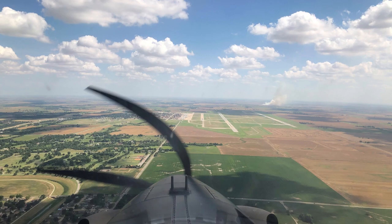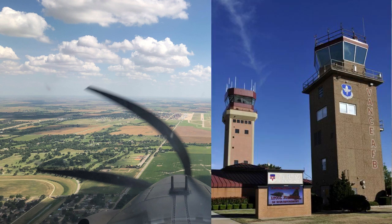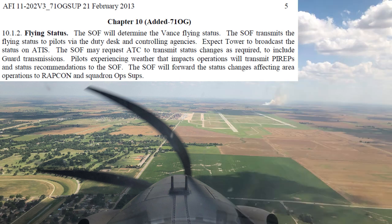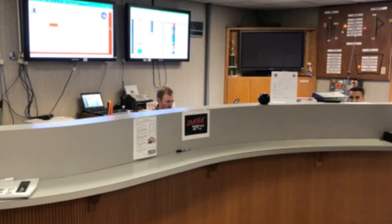The supervisor of flying, which is a T-6, T-1, or T-38 instructor pilot that sits in the air traffic control tower, sets the status based on current and forecasted weather as well as pilot reports. The SOF will update RAPCON and the operations supervisors when the flying status changes.